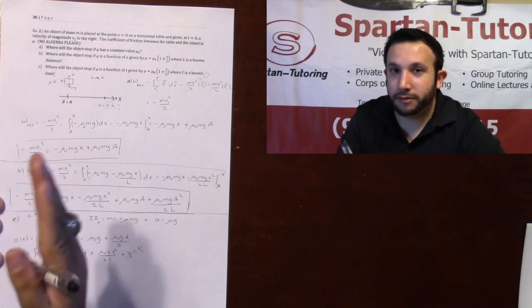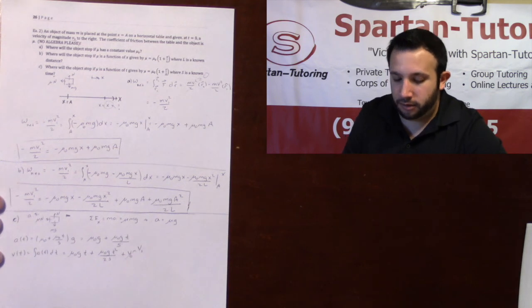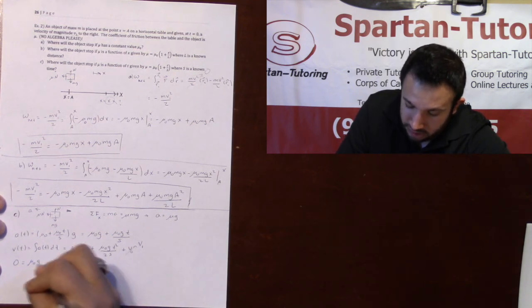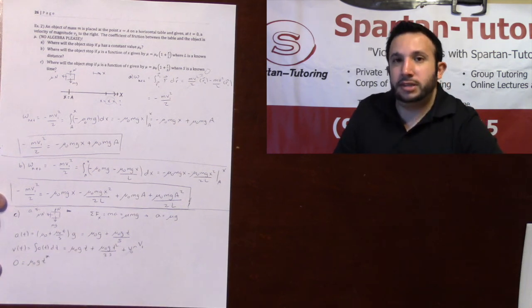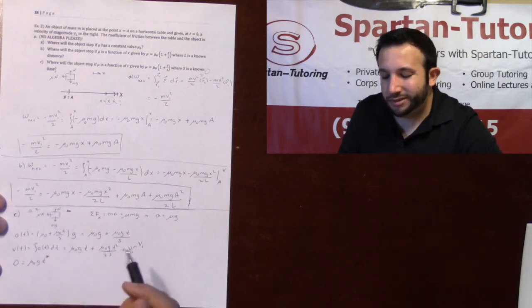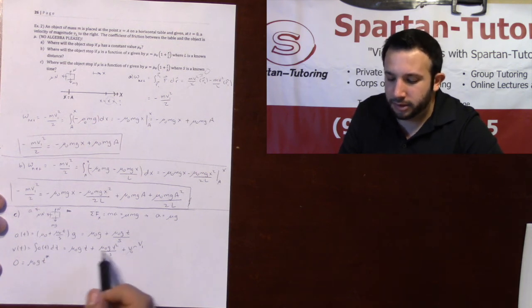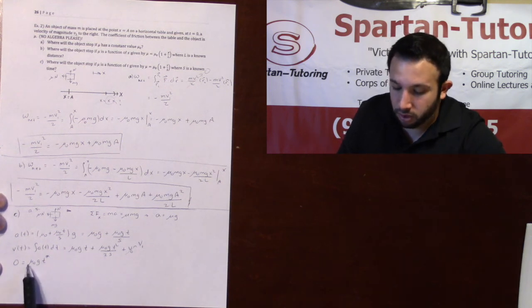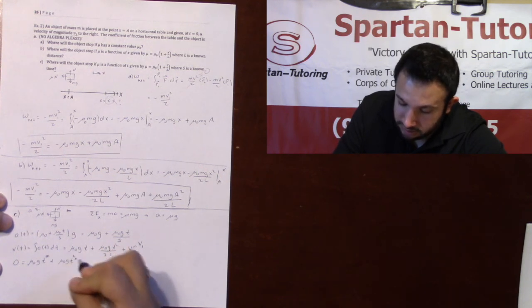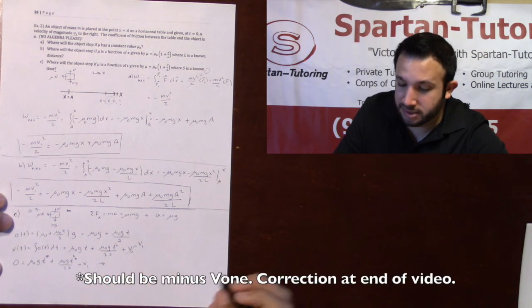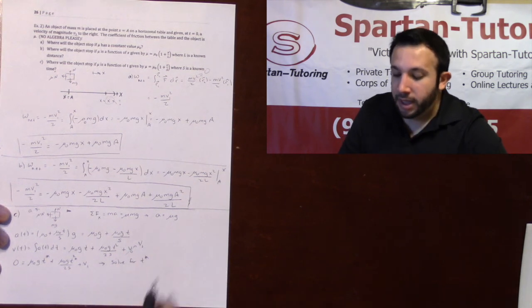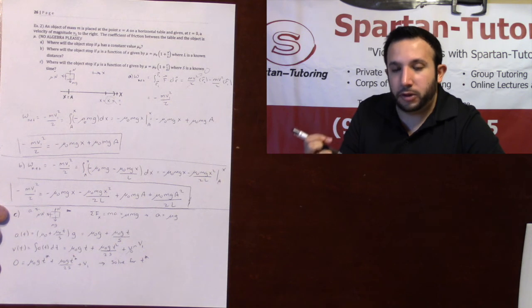Now I need to find when the velocity is zero. I'll call that time t-star — the time at which velocity equals zero. Setting zero equal to mu naught·g·t* plus mu naught·g·t*² over 2s plus v1. It's messy because you'd have to use the quadratic formula, but since it says no algebra, just state what you would do. So at this point you would solve for t-star, which is the time at which your velocity is zero.